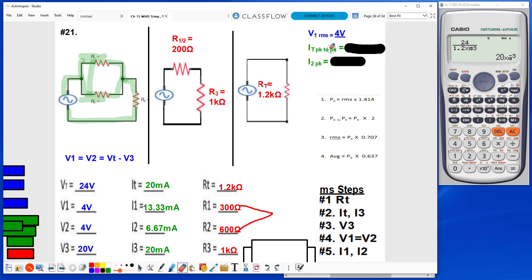Now I need It peak to peak. I have an It RMS of 20 milliamps, so the first thing I'm going to do is use this formula to find the It peak. So I take my 20 milliamps, I'm not going to put the milli in because I know my answer is going to be in milli, times 1.414, equals 28.28, that is my It peak.